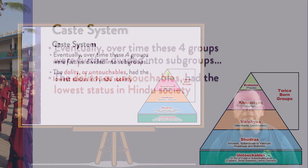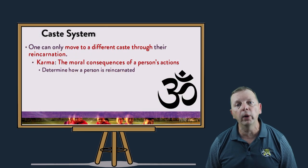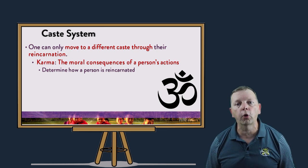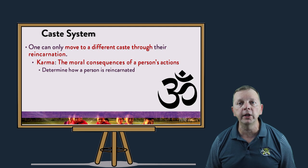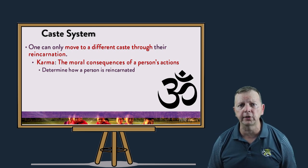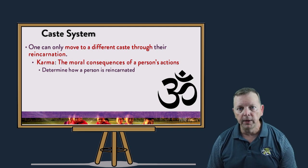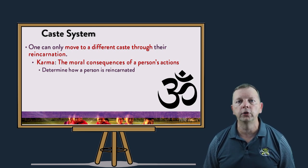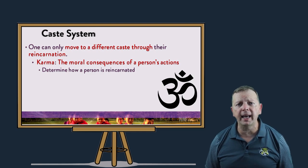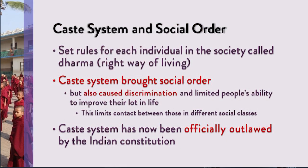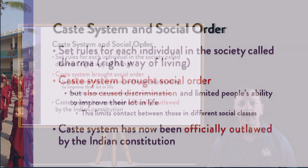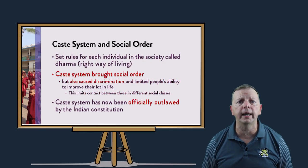Moreover, the only way that you can move into a different caste is through reincarnation. And what determined your caste was your karma — the moral consequences of a person's actions. Now, if you were a Dalit, then you obviously didn't live properly in your previous life. But if you live your life by good dharma, the right way of living, then you would be rewarded with good karma and reborn into a better caste. The social implications of Hinduism and the caste system were important, as it is another example of how religion helps structure society and manage human behavior. However, this also brought discrimination, especially against the untouchables — who were often excluded from education opportunities because it was considered unneeded. And while the caste system was officially outlawed in the 1949 Indian constitution, these attitudes still persist in places in India.